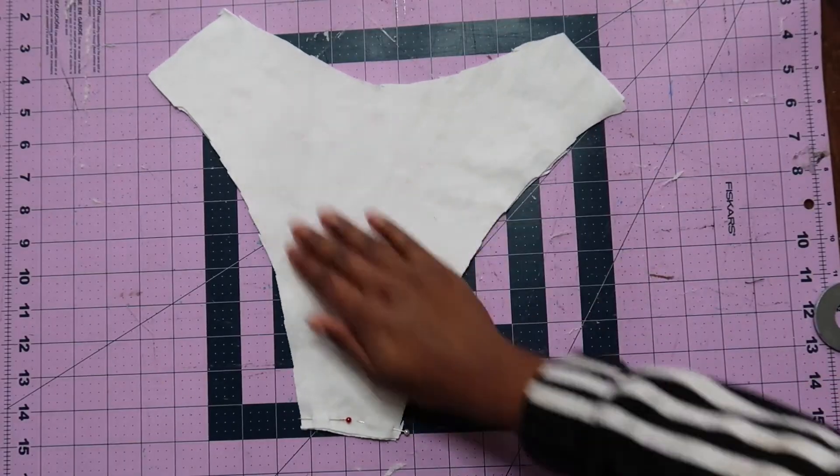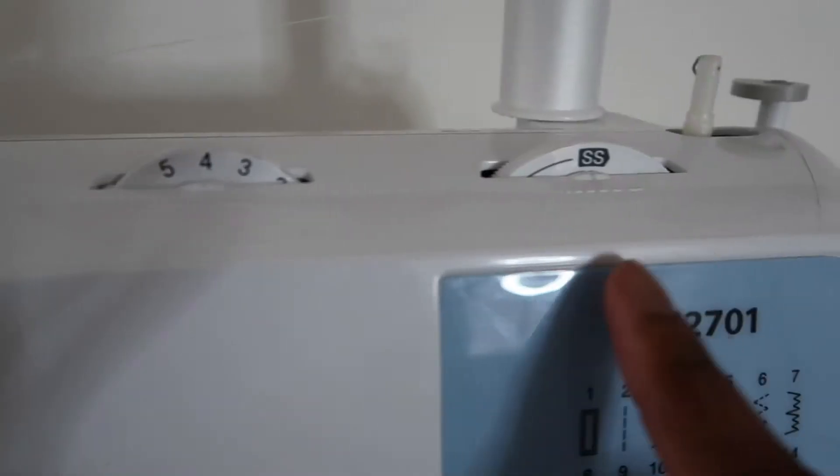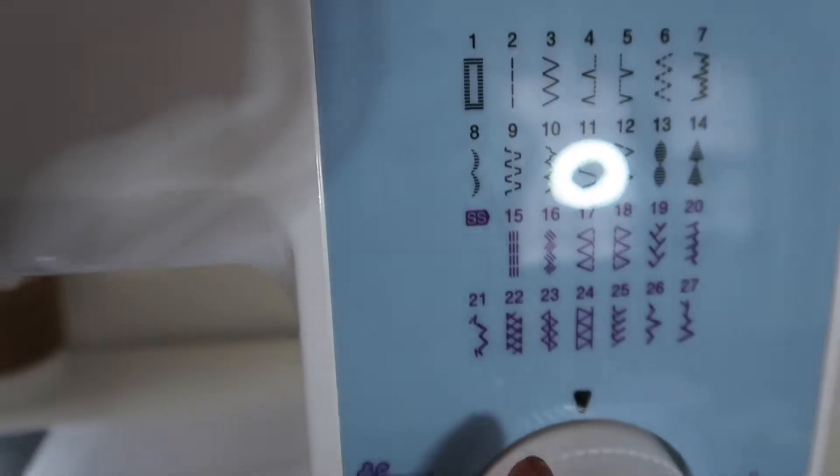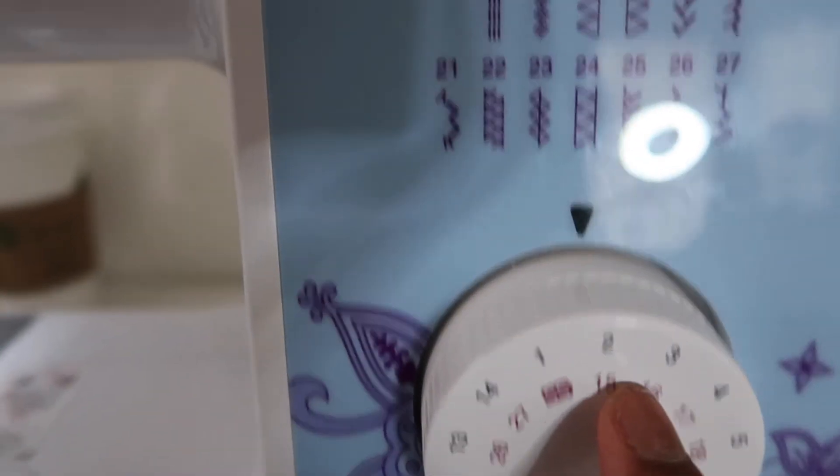For the panties, I'm going to connect that seam that was actually supposed to be on the fold with a stretch straight stitch. If you don't have this option on your sewing machine, just use a zigzag stitch. The stretch straight stitch gives you less puckering but also keeps the straight look and the stretch.